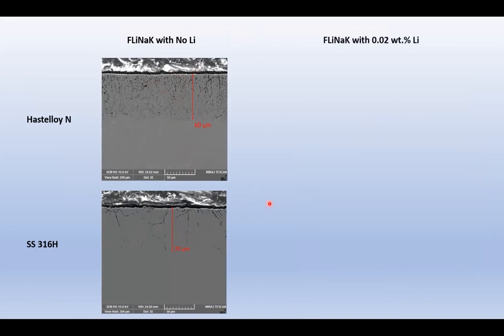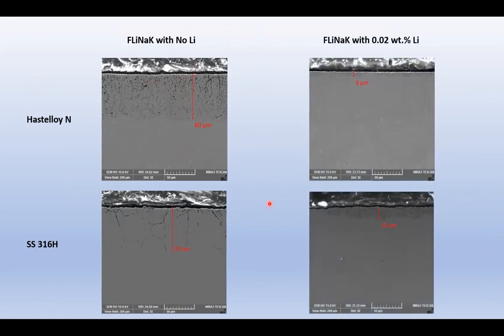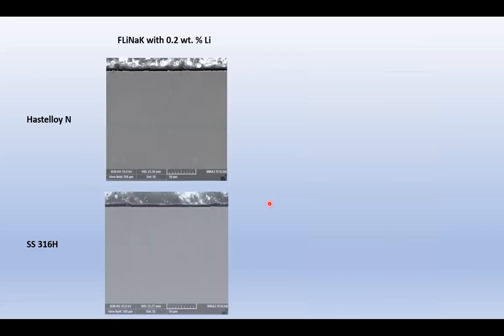But when 0.02 weight percent lithium is added, we can see that the attack goes down to 10 to 15 microns in both of these samples. Even the very small addition of lithium has reduced this corrosion drastically. Now, these samples were exposed to Flynac with 0.2 weight percent lithium, that is around 1.2 mole percent lithium. And we can see here that the corrosion is completely eradicated. This indicates that for the type and amount of impurities in our salt, 0.2 weight percent lithium is sufficient to achieve complete redox control and corrosion prevention.